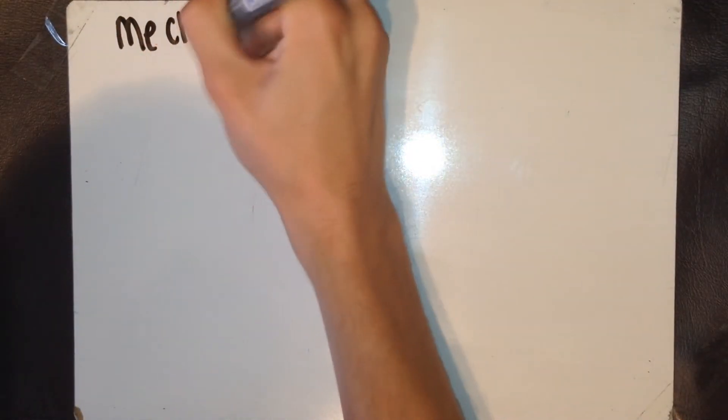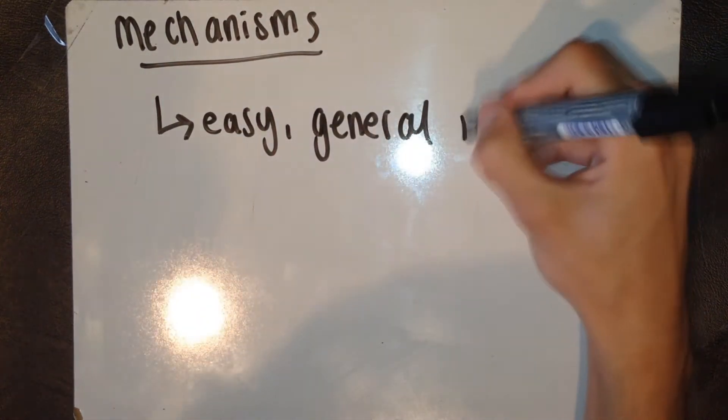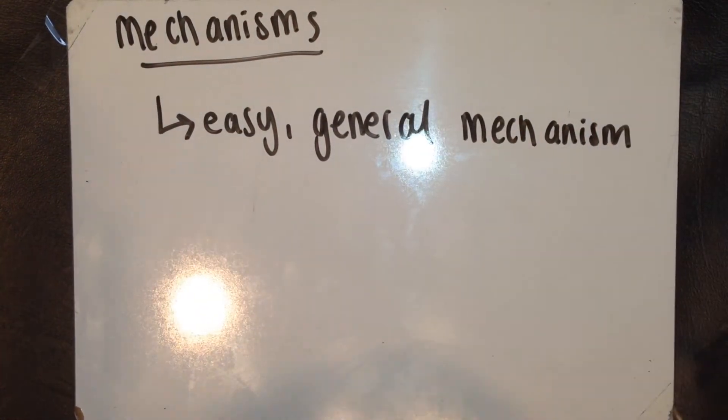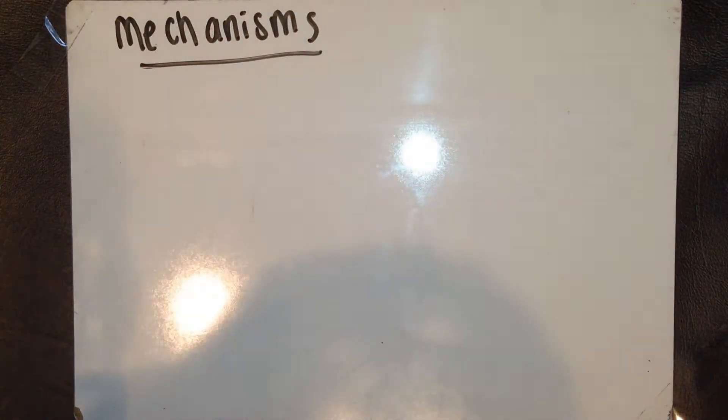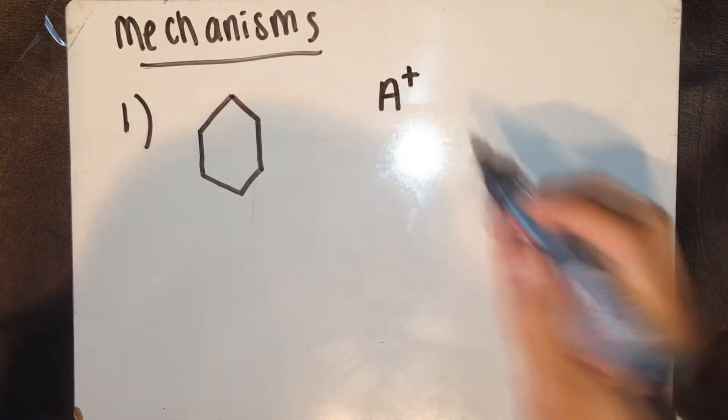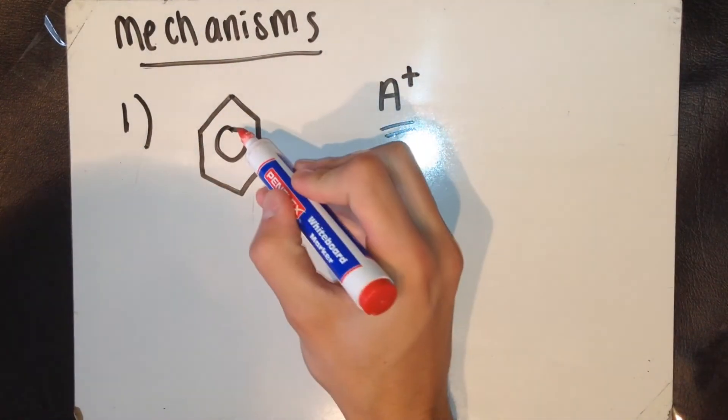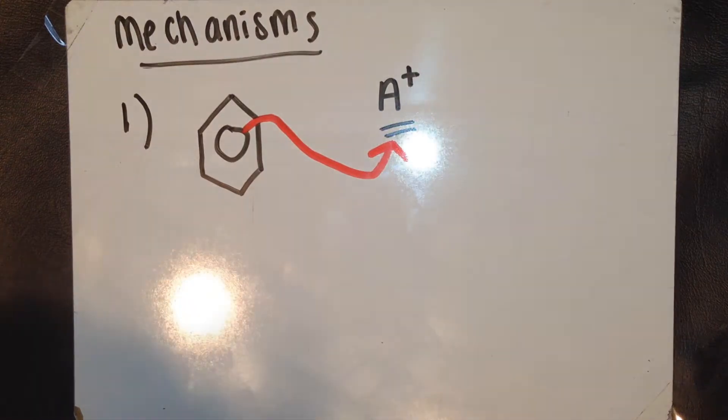Now, I'm going to go over the mechanisms of the electrophilic substitution reactions of benzene. I'm going to show you an easy to understand general mechanism that will make learning other mechanisms much easier. In this mechanism, the symbol A+ represents the electrophile. The red curly arrow represents the transfer and movement of an electron pair.